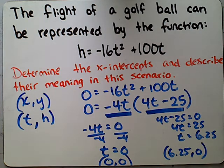What this means in this circumstance is that after 0 seconds, the height is 0. And after 6.25 seconds, the height is 0 again. We're talking about the flight of a golf ball. This makes sense because before the golf ball is hit, at 0 seconds, the ball is sitting on the ground. And in this case, at 6.25 seconds, the ball is coming back down to the ground.